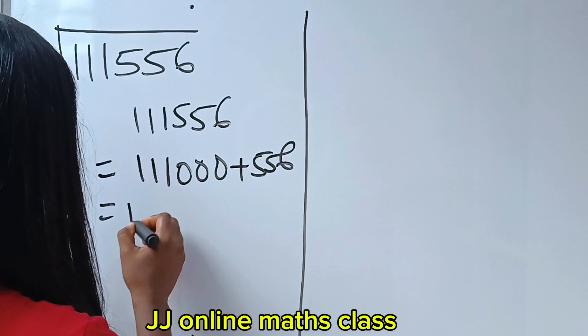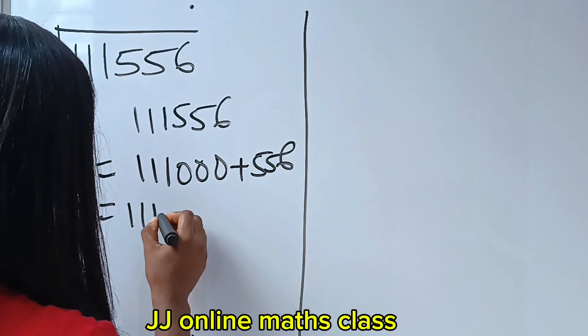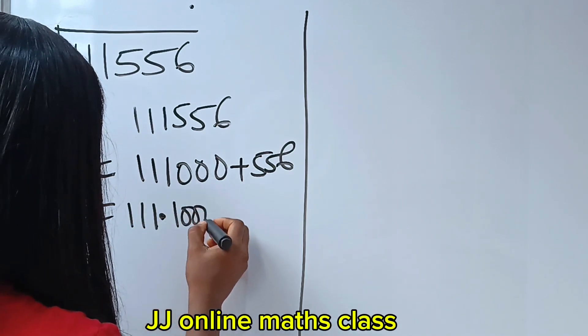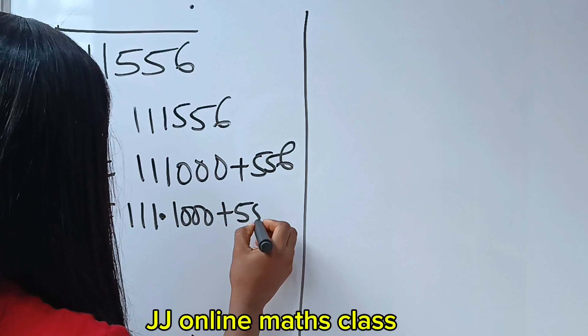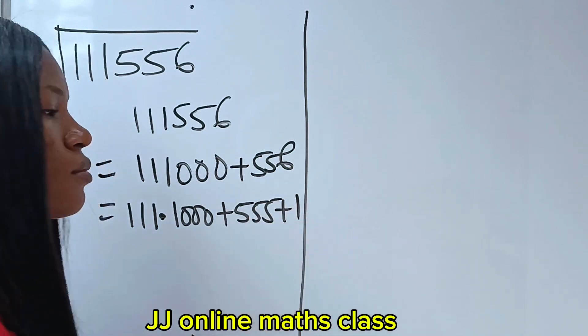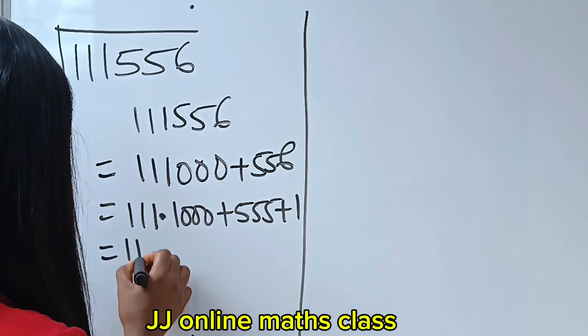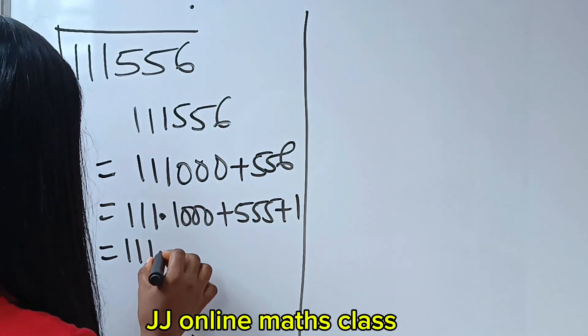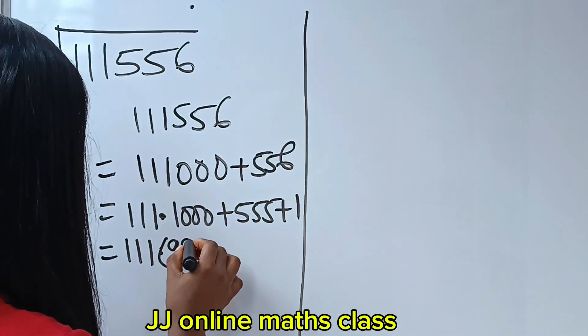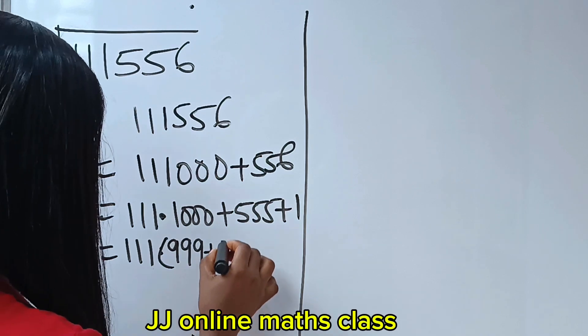Now this is the same thing as 111 multiplied by what? 1000, right? Plus 555 plus 1. So this is the same thing as 111 multiplied by... Now, 1000 is the same thing as 999 plus 1.